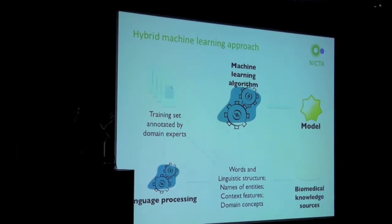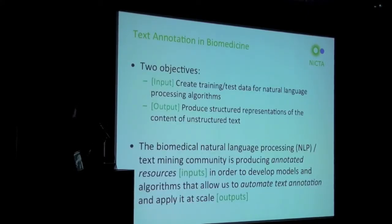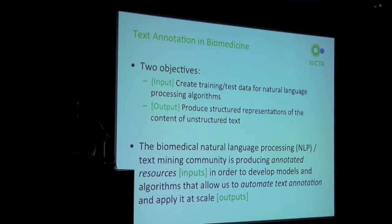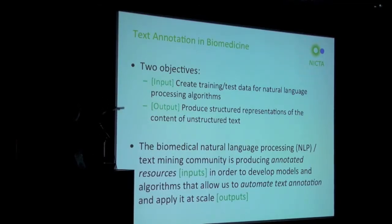The annotated training set is the example that we're trying to emulate with our computational models. To put that in a nutshell, text annotation has two main objectives: one is on the input side, to create training or test data for natural language processing algorithms; and the other is on the output side, to allow us to build algorithms that automatically produce structured representations of the content of unstructured text. We're building and using annotations both on the input side and on the output side.